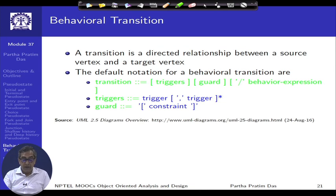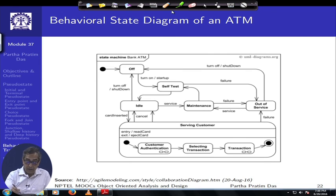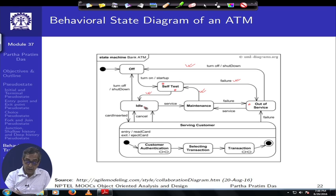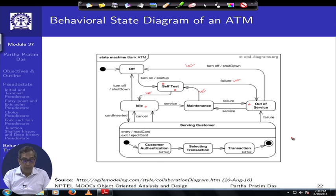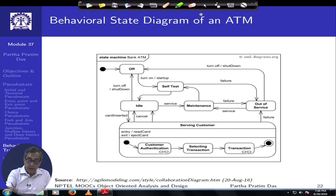Besides pseudo states, you have behavioral transitions. A transition is a directed relationship between a source vertex and a target vertex. Formally these are called behavioral transitions. Transitions may have guard conditions based on which the transition takes place. For example, if you are in the maintenance state and a failure event has happened, you take a behavioral transition into the out-of-service state. This completes the state machine diagram as a whole.